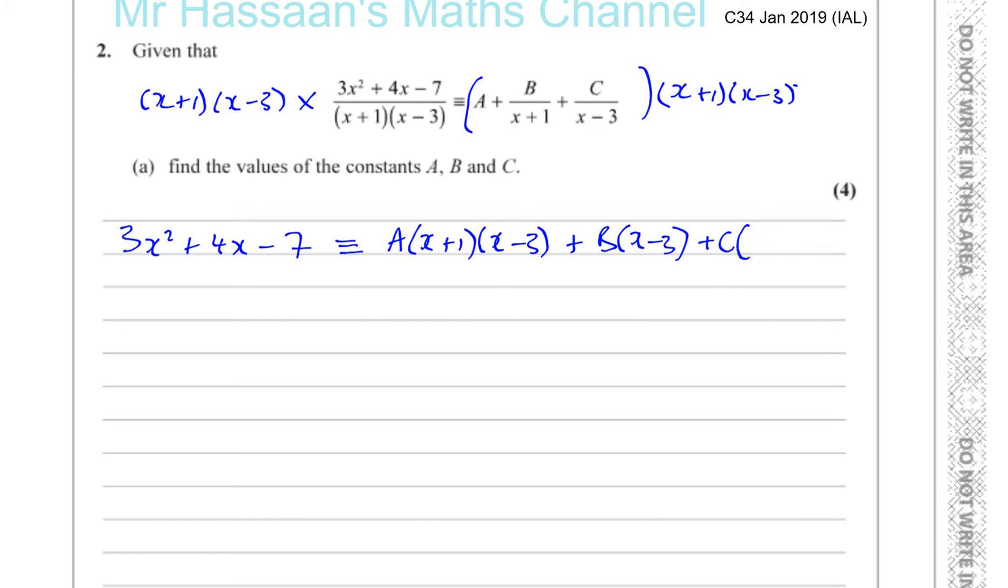Now we've got to find the values of A, B, and C. For A, probably the easiest way to do it is to compare the coefficients of x². You can see on the left side there's 3x², and on the right side the only x² term is A times x times x. When you multiply this bracket, you'll have x² times A, so we know that for sure A is equal to 3.